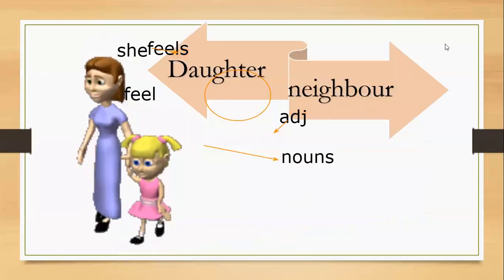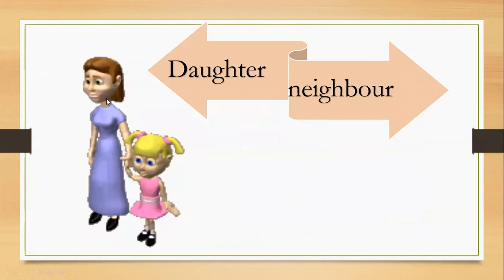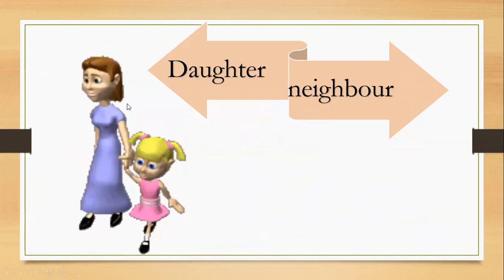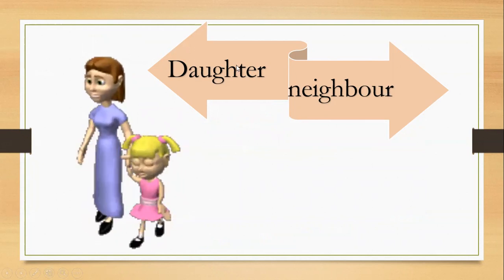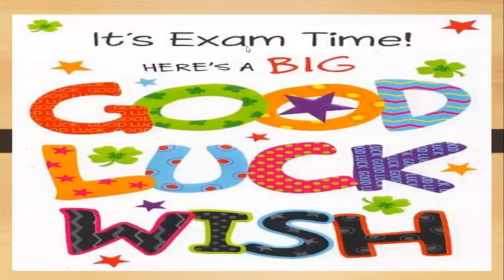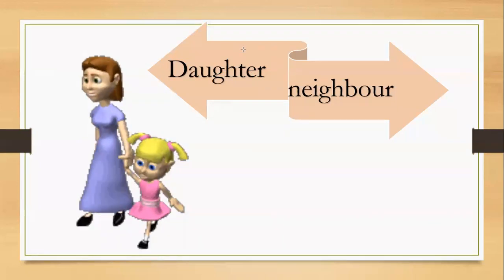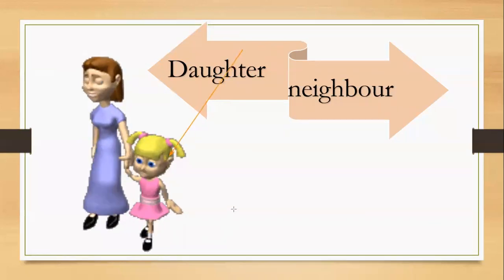Let's go to the last exercise for today. We have mom, mother, and daughter or neighbor. Daughter. Excellent. Daughter. Let's make it match with daughter. Excellent. This is a daughter.